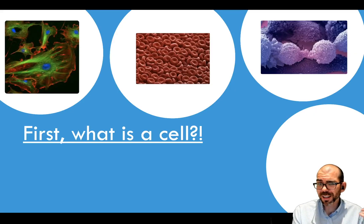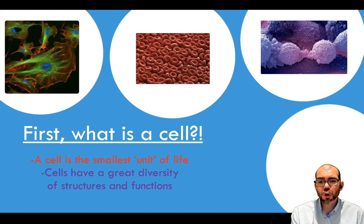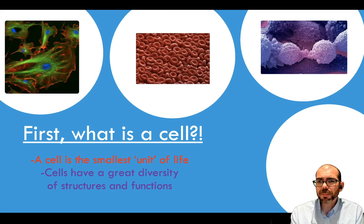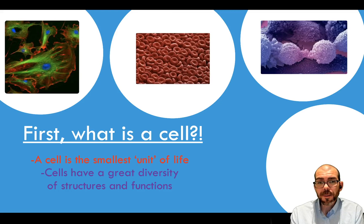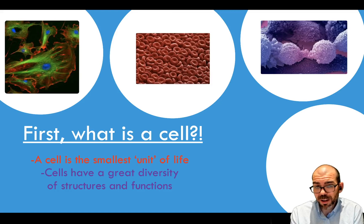What is a cell? A cell is considered to be the smallest unit of life and they have a tremendous amount of diversity in structure and in function. On the top left you can see a neuron, the kind of cell you'd find in your brain sending signals to one another. In the middle is a red blood cell—they appear dented because they don't have a nucleus. And on the right is a cancer cell. All of these are excellent examples of cells with tremendous diversity in their structure and function.